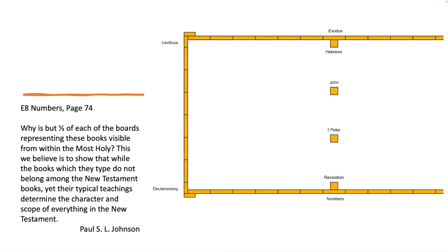Why is but one-third of each of the boards representing these books visible from within the Most Holy? This we believe is to show that while the books which they type do not belong among the New Testament, yet their typical teachings determine the character and scope of everything in the New Testament.